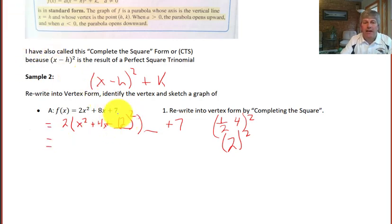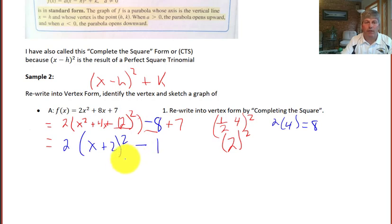But we have just manufactured this 2 squared. We've manufactured 4 and it's being multiplied by 2. So we've created 4 in this. So we have to offset that. In fact, we've created 4, but we've created 2 times 4, which is 8. So we need to subtract 8 as well. So these offset each other. Well, the x squared plus 4x plus 2 squared is our perfect square trinomial. So we have 2 times x plus 2 quantity squared minus 1. Minus 8 plus 7 is our minus 1. So now we have our h and k. That's our vertex or vertex form here. Our h is negative 2. Our k is negative 1. And that is the vertex of our parabola.